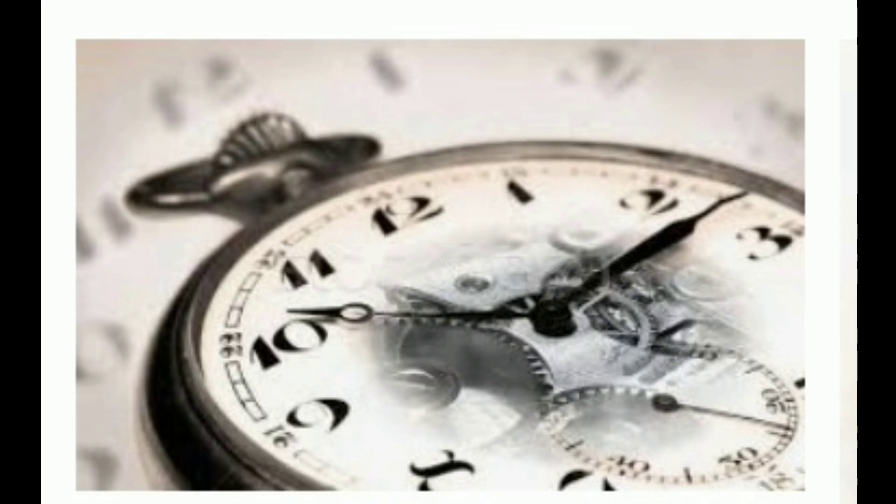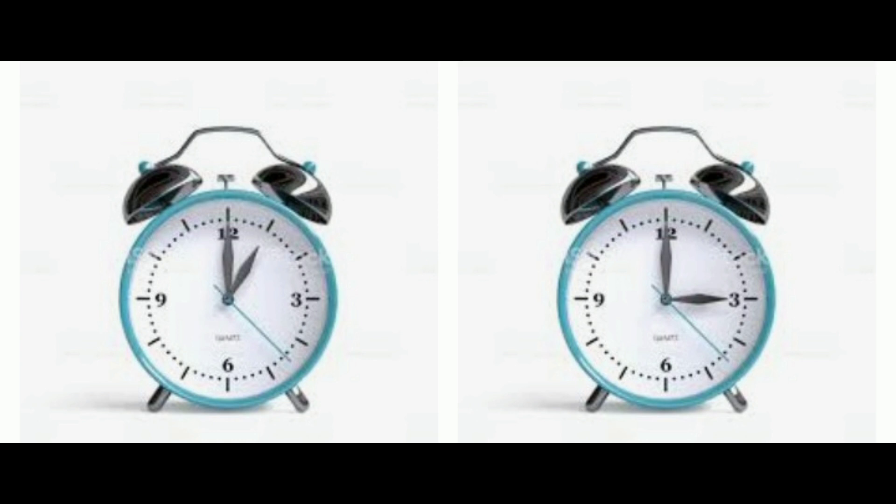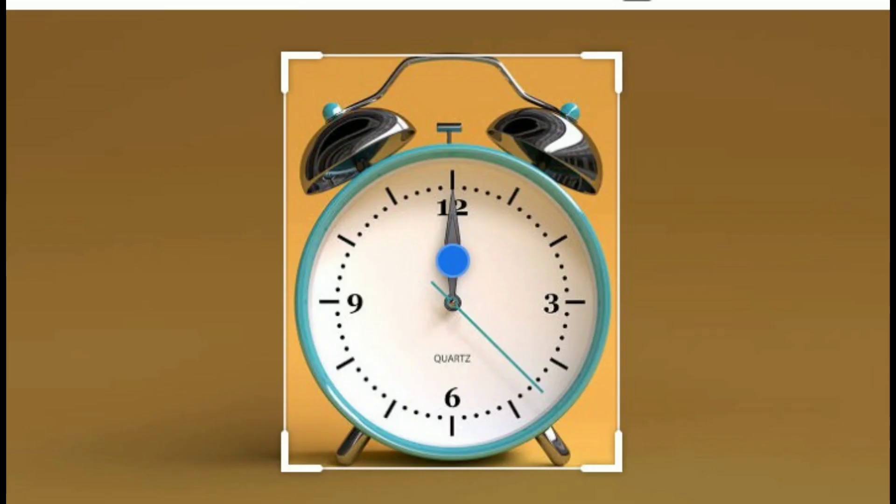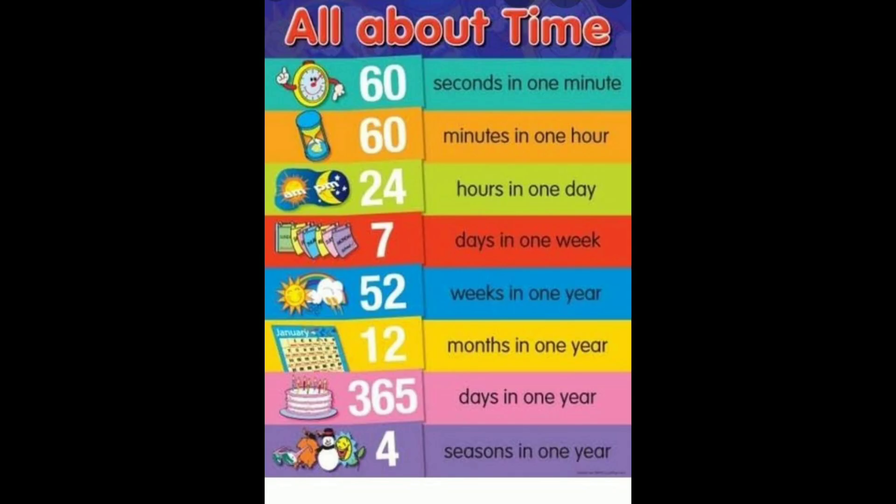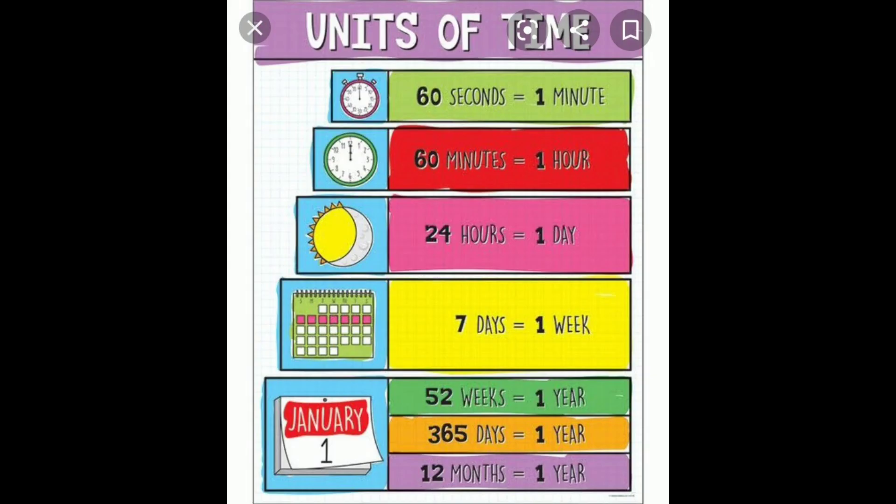Larger units for measuring time are day, month, year and millennium. 1 millennium equals 3.16 × 10^9 seconds. 60 seconds equal 1 minute. 60 minutes equal 1 hour. 24 hours equal 1 day. 7 days equal 1 week. 52 weeks equal 1 year. 365 days equal 1 year. 12 months equal 1 year.